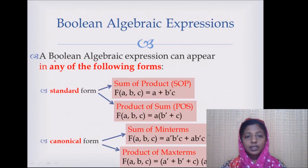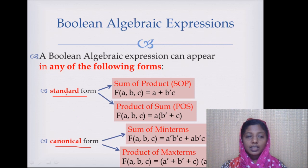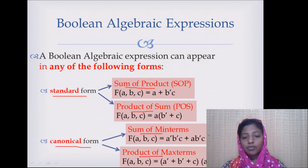Any Boolean expression can take one of two forms: either the standard form or the canonical form. The standard form can be represented in two ways — either as sum of products or product of sums. Similarly, the canonical form can be represented using sum of minterms or the product of maxterms.